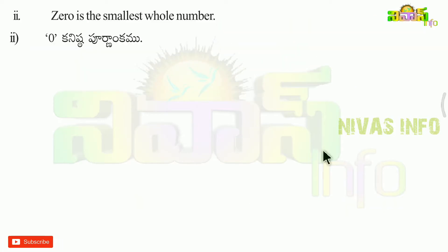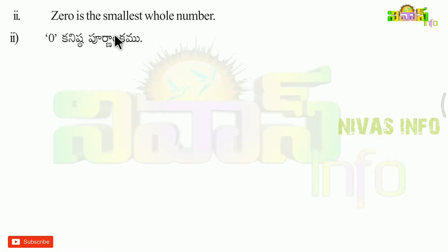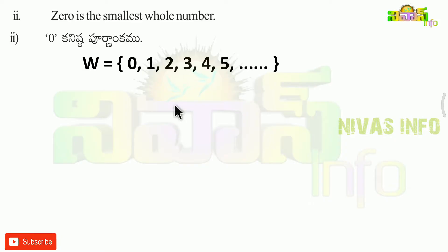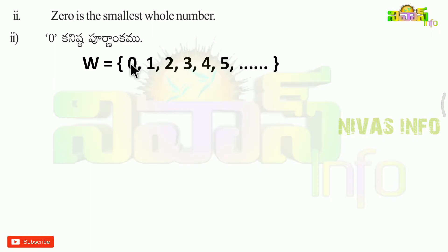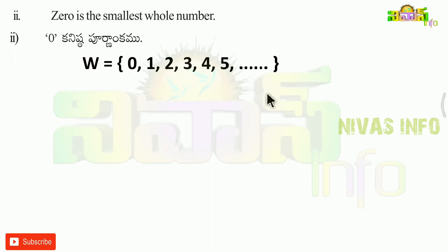Next statement: 0 is the smallest whole number. Whole numbers start from 0, so 0 is the least whole number. Yes, this statement is true.